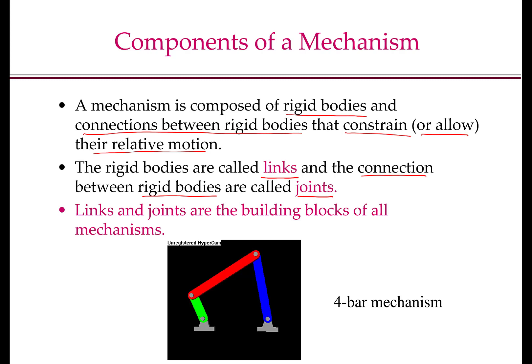As an example, if you consider the four-bar mechanism that I also showed in the previous lecture, the green bar, the red bar, and the blue bar are all links of the mechanism. And these are joints — more precisely revolute joints or pin joints, or sometimes we will call them pivots of the mechanism.